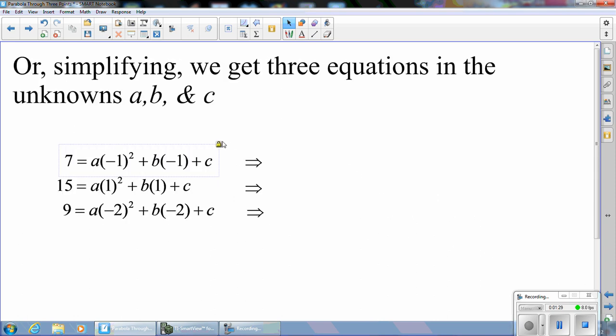If we simplify these equations, we get 7 equals a minus b plus c, 15 equals a plus b plus c, and simplifying this last equation, 9 equals 4a minus 2b plus c.